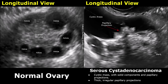This mass has very thick papillary projections with irregular contours, with mixed solid and cystic components, as well as thick septations. The rest of the mass is anechoic with no low-level internal echoes. This irregular shape and thickness are alarming features.